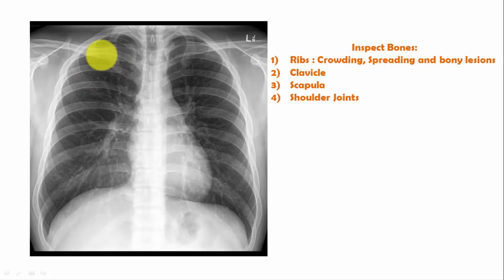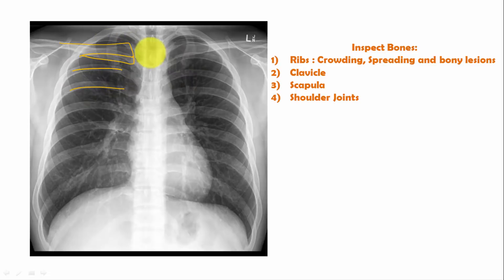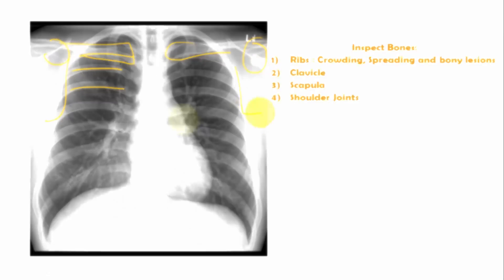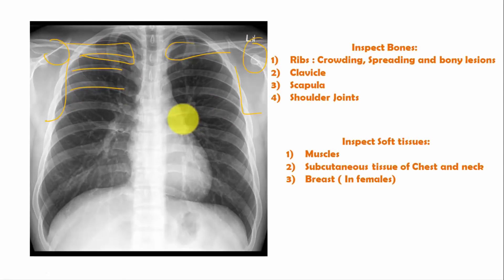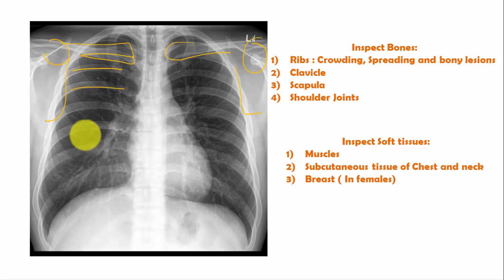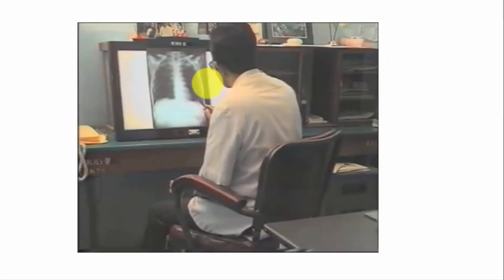After inspecting the lung fields and cardiac shadow, inspect the bones. Look at the ribs for crowding, spreading, and any bony lesions. Mark and examine the clavicles, shoulder joints, and scapula. Also note the soft tissues — look at the muscles, subcutaneous tissue of the chest and neck, and in females also examine the breasts.